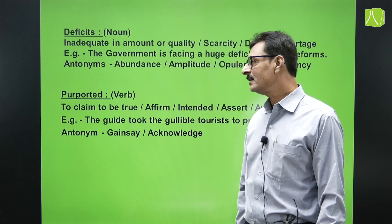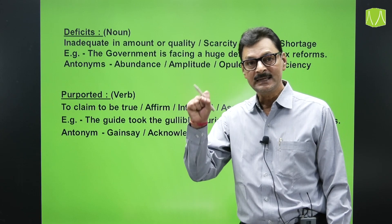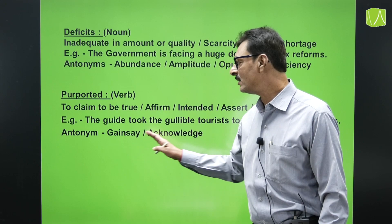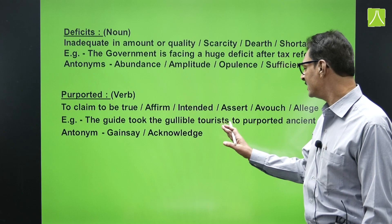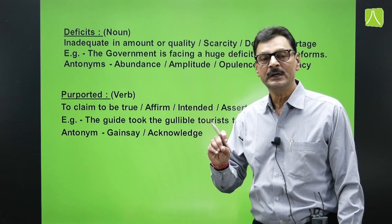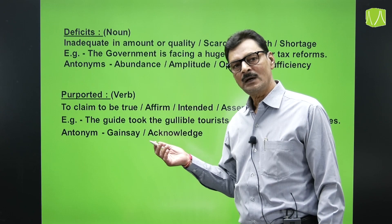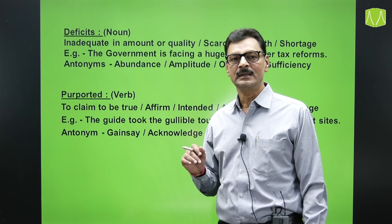Another good word: 'purported,' meaning to claim to be true or to show something as correct. Synonyms include affirm, assert, intended, allege. Antonyms are gainsay or acknowledge. Example: 'The guide took the gullible tourist to purported ancient sites' — sites which were shown to be true ancient sites. Gullible means one who believes everyone easily.